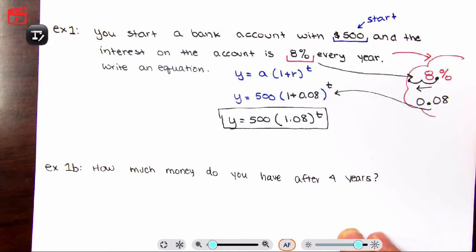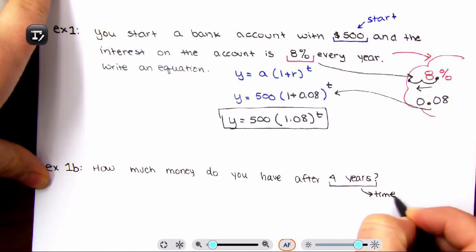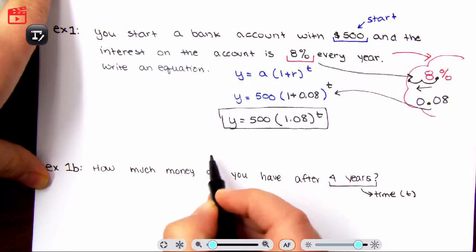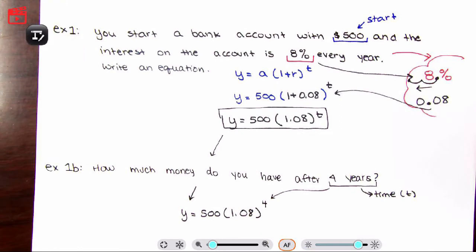Now let's do part B of that question. How much money do you have after four years? So four years is your T value. You're going to take your equation: Y equals 500 times 1.08 to the T power. In this case, your T is 4. And you're going to evaluate. Use a calculator for this.